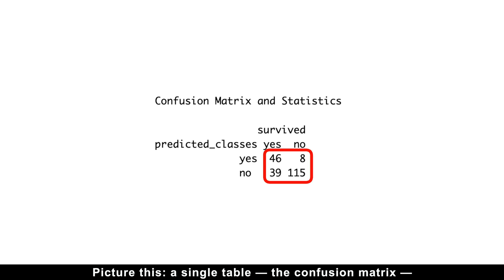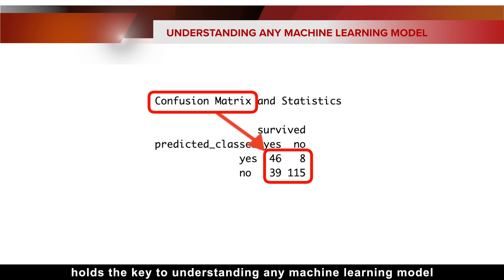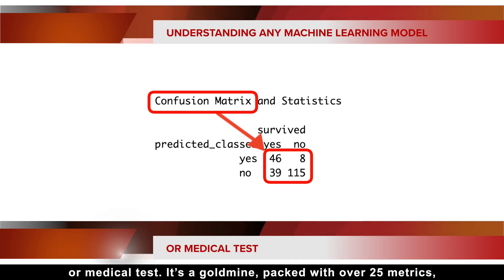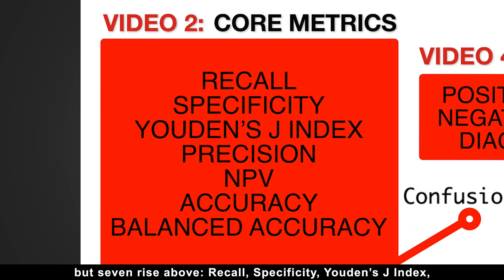Picture this. A single table, the confusion matrix, holds the key to understanding any machine learning model or medical test. It's a goldmine packed with over 25 metrics, but 7 rise above.